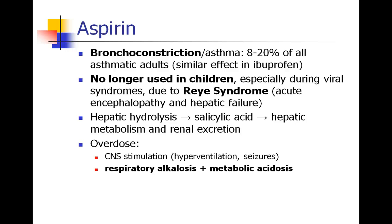Aspirin goes to the liver where it's hydrolyzed into salicylic acid, then metabolized and renally excreted. Patients who overdose on aspirin have an unusual combination of effects: CNS stimulation leading them to hyperventilate and even have seizures, resulting in a respiratory alkalosis, but from the aspirin itself, a metabolic acidosis.